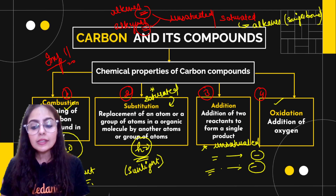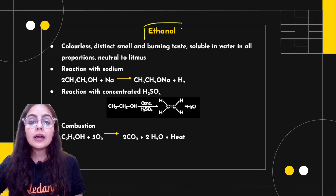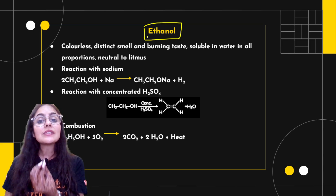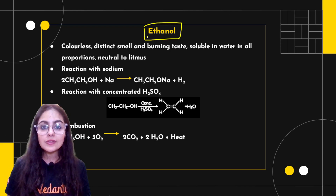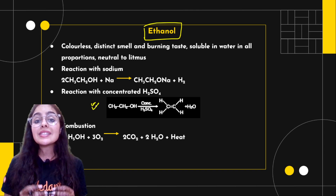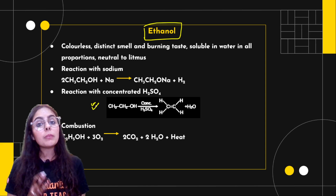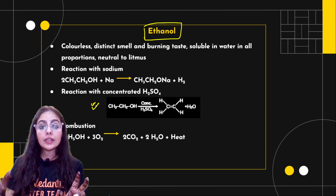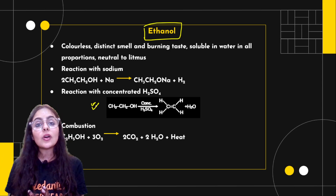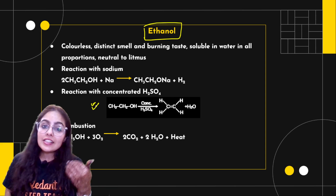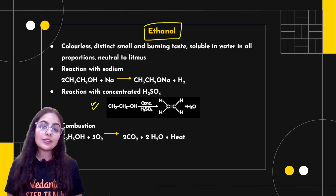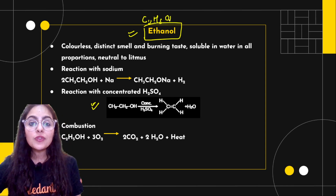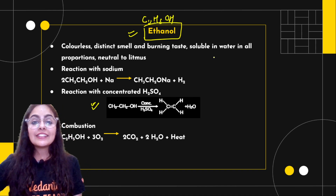Now coming to ethanol. You have learned about ethanol and ethanoic acid, including esterification, saponification, soaps and detergents. Carbon and its compounds is a very important chapter — not only for Grade 10, but also for Grade 11 and 12 if you take science. This chapter leads into organic chemistry, which is even more interesting. So the base you are creating right now matters a lot. Ethanol is commonly called alcohol — it is C2H5OH, which is a consumable alcohol. Its common name is ethyl alcohol.